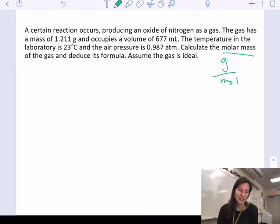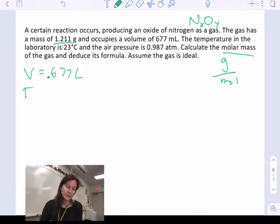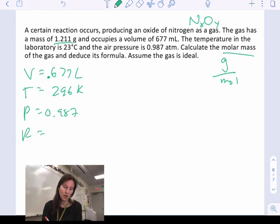Given this problem it says I have a reaction that's producing an oxide of nitrogen, which means some NO compound, some number of N's and some number of O's. That gas has a mass of 1.21 grams. It occupies a volume of 67 milliliters, which I'm going to change into liters. It has a temperature of 23, which means I have 296 Kelvin. And then a pressure of 0.987. From this I would choose the R of atmospheres because that's what I have.